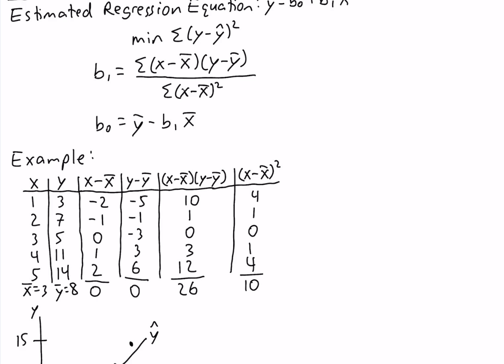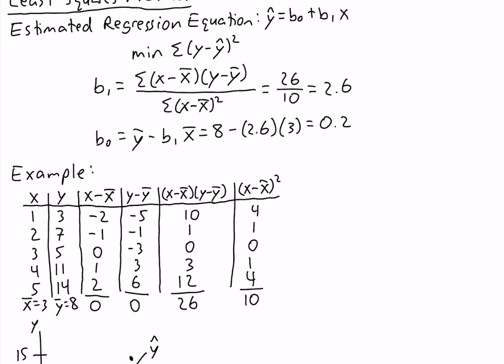So the value of b1 is equal to 26 over 10, which is equal to 2.6. Now that we have b1, we can calculate b0. y-bar is 8, so we have 8 minus 2.6 times x-bar, which is 3, giving us 8 minus 7.8, which equals 0.2. So our estimated regression equation is y-hat equals 0.2 plus 2.6 times x.